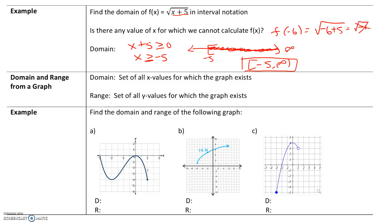If you're given a graph, domain is the set of all x values for which the graph exists, and range is the set of all y values for which the graph exists. For part A, looking at all x values: the graph starts here and exists up until positive 1. There's an open circle on negative 3, so negative 3 is not included — that's a parenthesis. There's a closed circle on 1, so 1 is included. The domain is negative 3 comma 1.